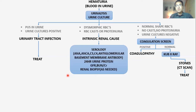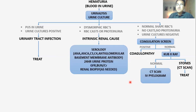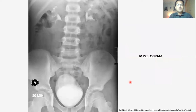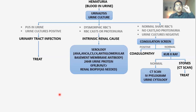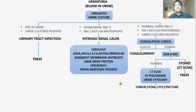If the KUB x-ray is normal, you can go for CT scan — which can also find stones missed on KUB x-ray — and IV pyelogram. IV pyelogram is an investigation where you give contrast to the patient, which is excreted by the urinary system; any defect in the urinary tract is caught on x-ray. You can also go for urine cytology to check for the presence of malignant or tumor cells in the urine, which can reveal tumors, stones, or cysts.